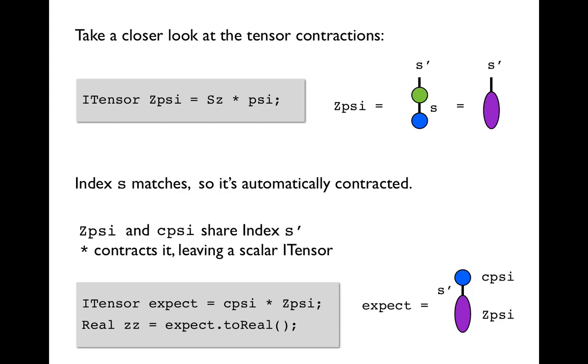So just to review how the automatic contraction in the itensor library works. Let's take a closer look at the tensor contractions involved in computing the expectation values on the previous two slides. Instead of making the sandwich between the bra, operator and ket right away we can break it down into some smaller steps. So first of all let's think about the right two factors in that product, which would be the Sz operator times psi.